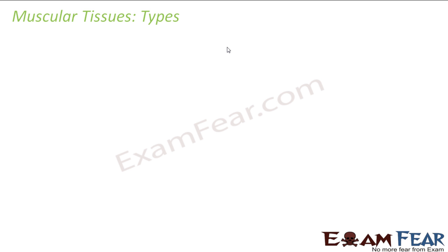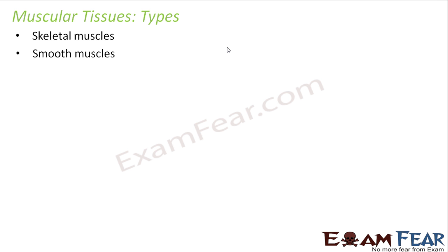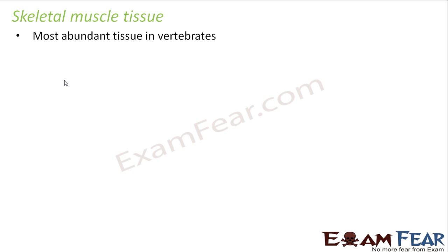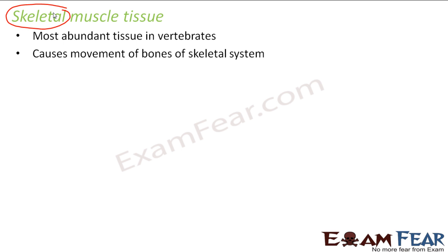Now let us look at the different types of muscular tissues. There are basically three types: skeletal muscles, smooth muscles, and cardiac muscles. We will talk about each one. So, skeletal muscle tissue is the most abundant tissue in vertebrates. As the name suggests, skeletal muscle tissue has something to do with the skeleton — it causes movement of bones of the skeletal system.